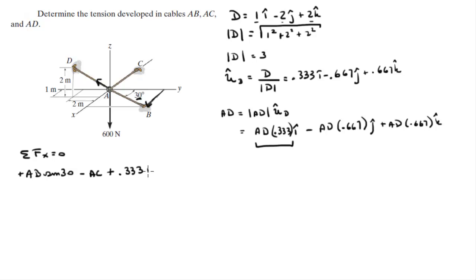And that is equal to zero. So that comes out to be 0.5 AB minus AC plus 0.333 AD is equal to zero. This is our first equation.